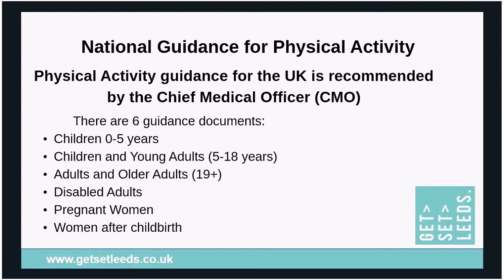Looking at the national guidance for physical activity, there are actually six guidance documents outlining what physical activity different groups should be doing. These include separate guidelines for children up to five years, children and young adults, adults and older adults, disabled adults, pregnant women, and women after childbirth. All of this guidance comes from Public Health England and the Chief Medical Officer, following a rigorous process of reviewing the research and evidence base.